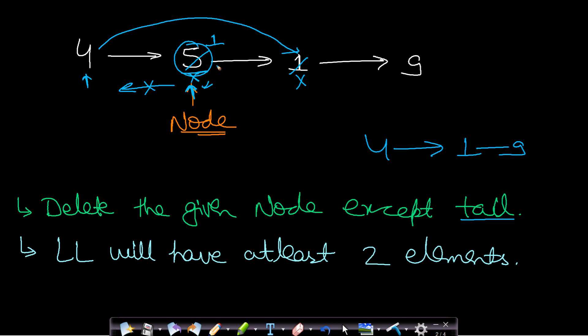Because if you are asked to delete the current node, then what we were doing, we were just copying the next node's value to the current node and we were deleting the next node. But then if we are asked to delete this last node, that is the tail node, then there is no next node, it is null. Therefore, we cannot copy the value of next node to current node and delete the next node. This technique will not work if we are asked to delete the tail node.